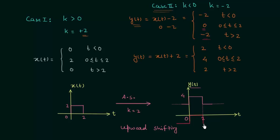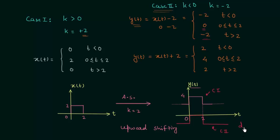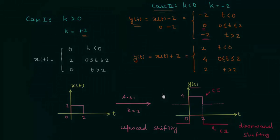This is the complete waveform for case number 2. The waveform for case 1 shows upward shifting, and the waveform for case 2 shows the whole waveform moving downward after amplitude shifting. So case number 2 is the case of downward shifting. This is all for this lecture, see you in the next one.